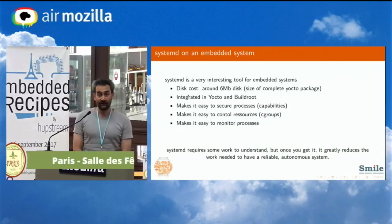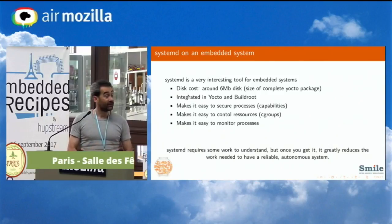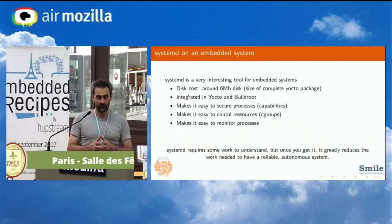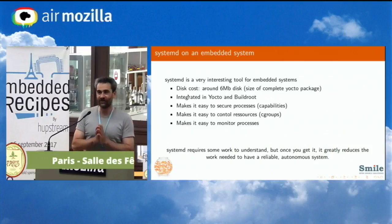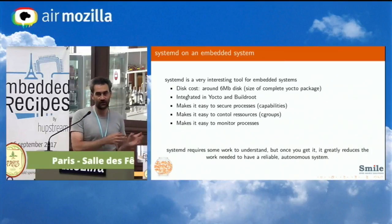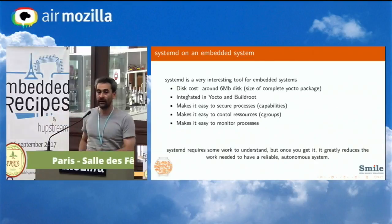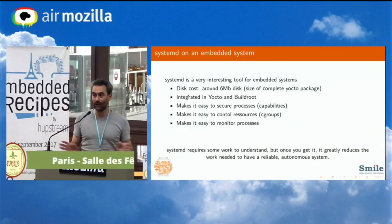Systemd makes it very easy to control resources. Control groups have been mentioned earlier today — they're awesome, but hard to use because you have to create directories, assign tasks, monitor everything, and understand every parameter. With systemd, you just have two parameters: I want this one to have that much CPU, I want this one to have that much bandwidth. It will set it for you. No magic, just simple.